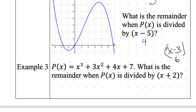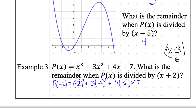So p of negative 2 equals negative 2 cubed plus 3 times negative 2 squared plus 4 times negative 2 plus 7. We're plugging in the opposite value, negative 2 — very similar to synthetic division. Then we're just evaluating what that is. What is negative 2 to the power of 3? What is 3 times negative 2 to the power of 2? Simplify all of this and you're done.